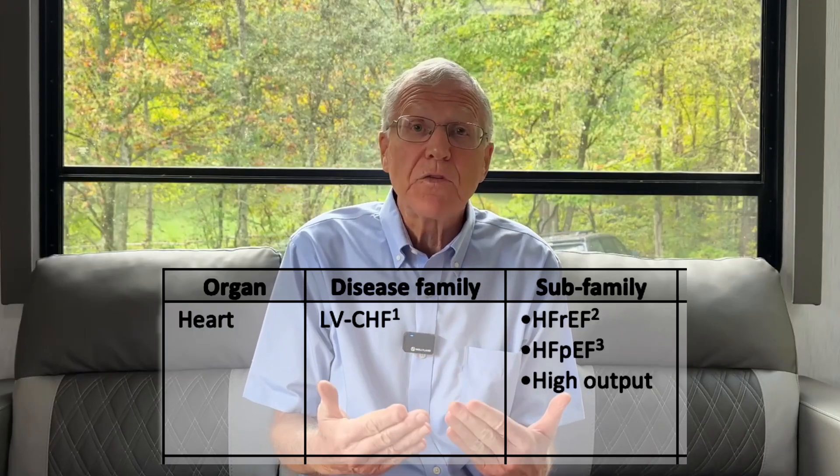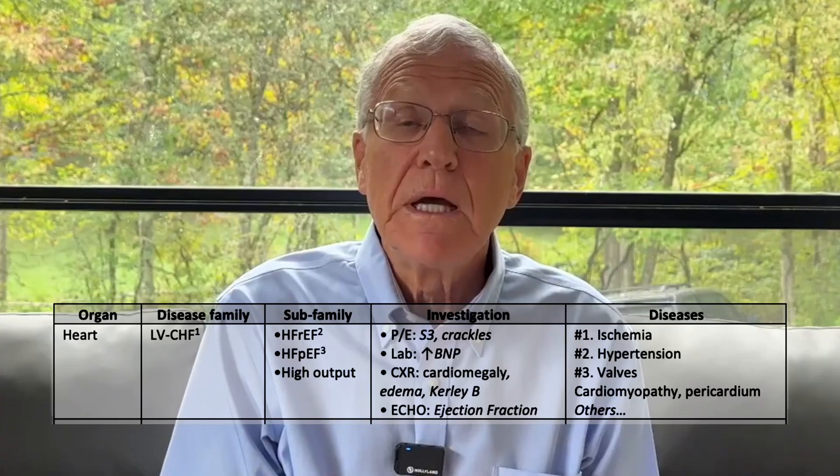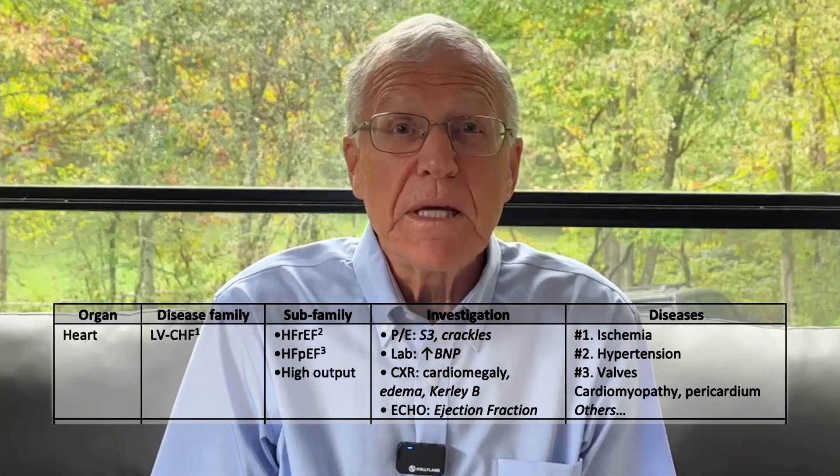If I have something like shortness of breath, we're going to say: what organ system could that be? That will be heart or lung. From the organ, we say: which family of diseases is that? For shortness of breath, that would be left ventricular congestive heart failure. But that's going to subdivide into other families because left ventricular congestive heart failure can be classified lots of different ways. If you're doing it in an echo center, they'll classify it by reduced or preserved ejection fraction. If you're doing it by likely causes, it's ischemia, hypertension, and valves. But even valves are still a family with further subfamilies — mitral or aortic — and you're still not at a diagnosis because your valve can be regurgitation or stenosis.